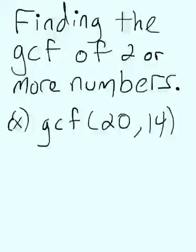It works best with just two numbers. So if you have more than two numbers, perhaps you can do it in pairs. Work with one pair of numbers, find the GCF, and then take that with the other number or other numbers. So here our problem is to find a GCF of 20 and 14.